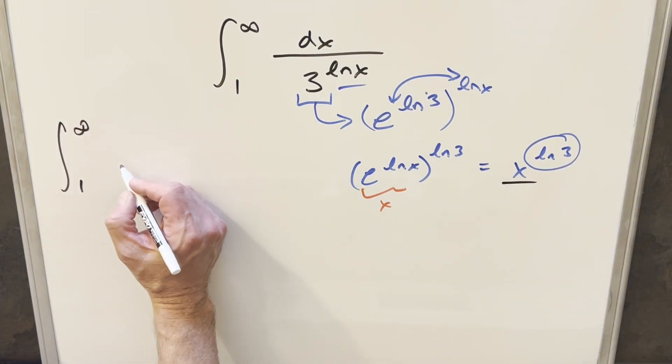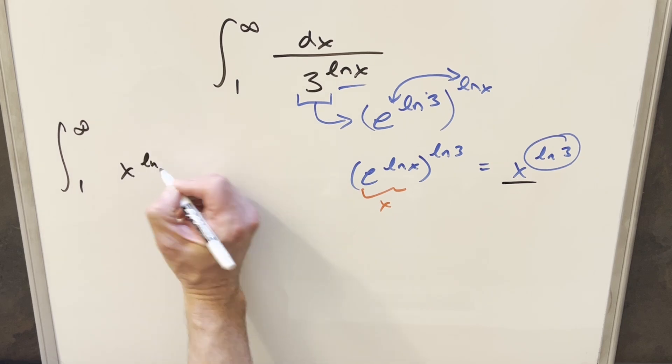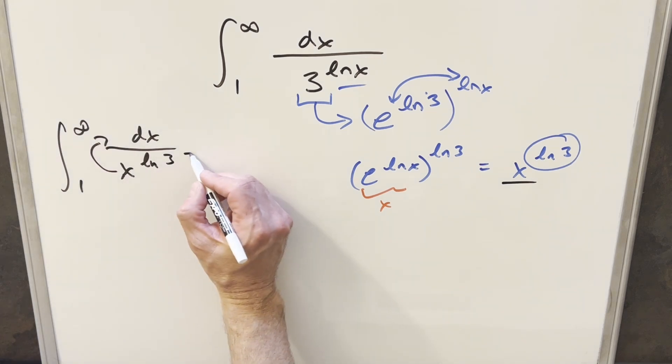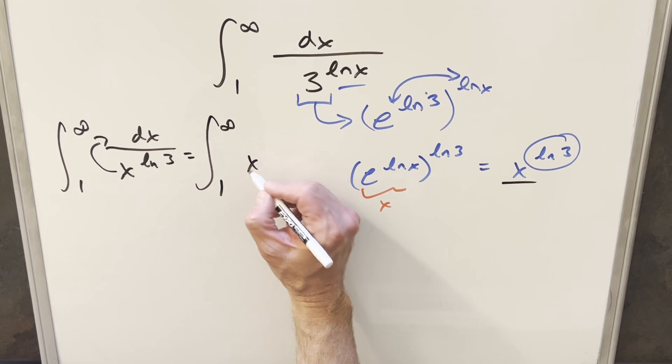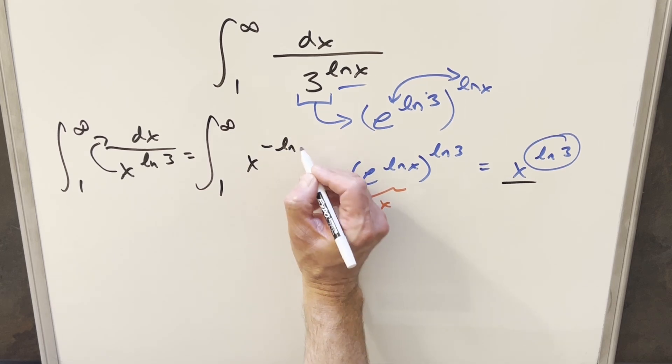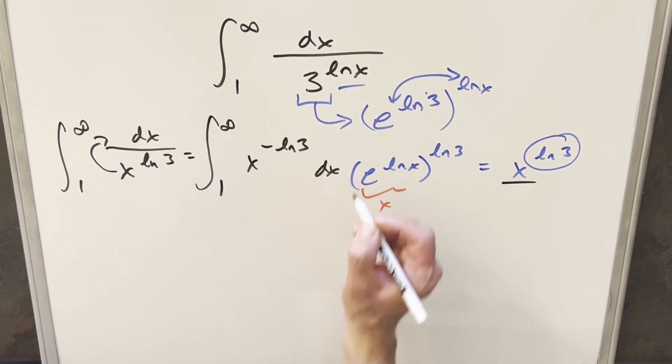So we have this integral and we have in the denominator, this is now, we have this rewritten as x to the ln 3 and we've got dx in the numerator. But then from here, let's just take this into the numerator and set this up so we can do power rule on it. So we'll have this, again, same bounds. Now this is going to be x to the negative ln 3 dx.